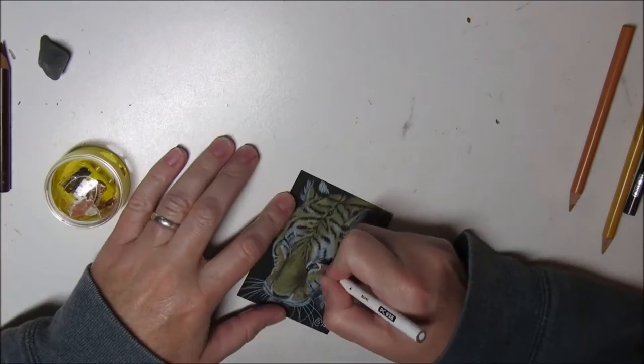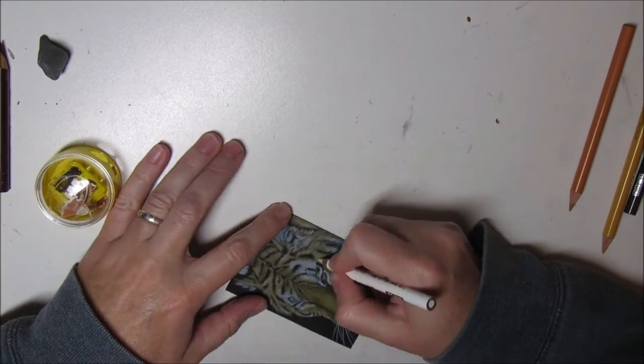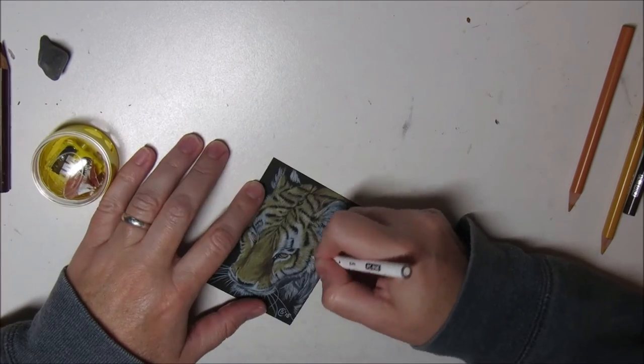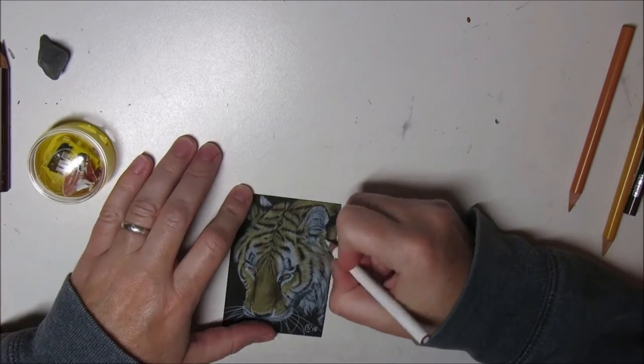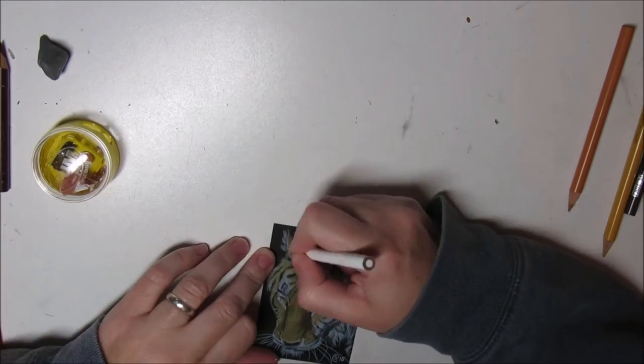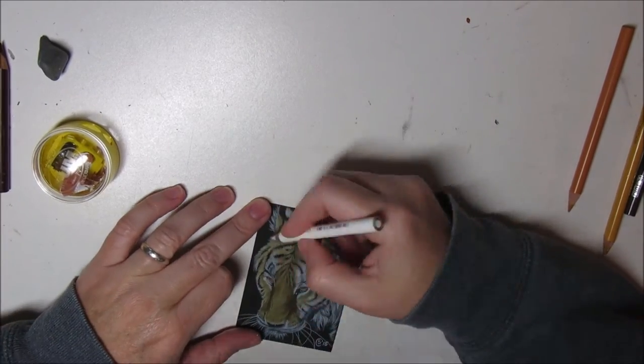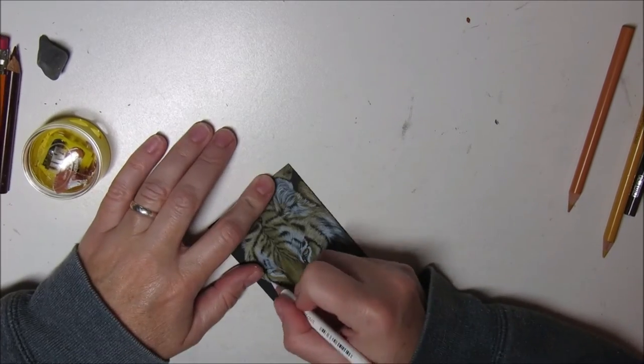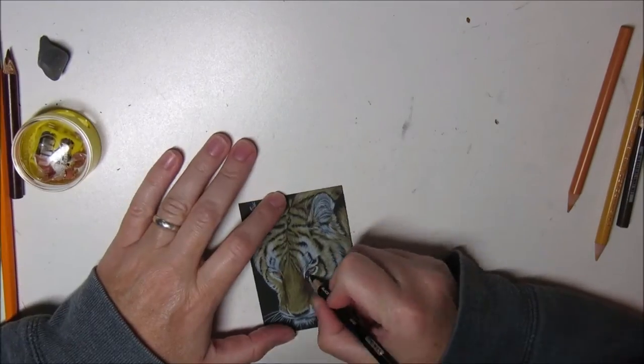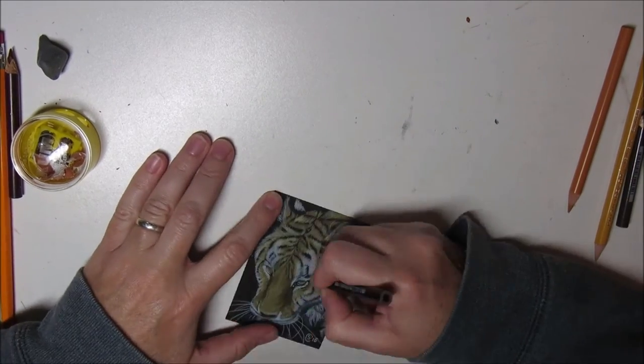The next color I use is yellow ochre, and then on top of that I use goldenrod in the darker areas. Those two are pretty much the darker mid-tones. Then I worked on the highlights again with the white pencil, adding more white to the white fur and also to the lighter orange parts of the fur.